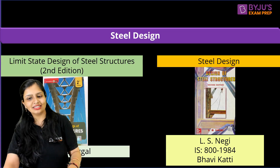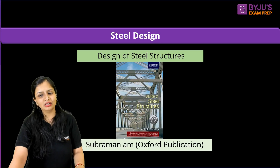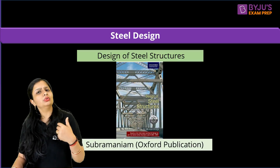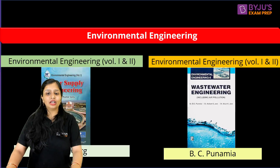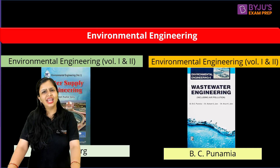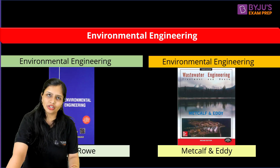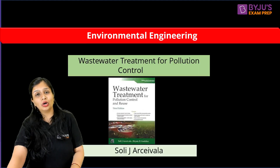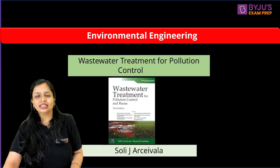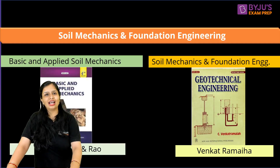For Steel Structures, I liked SK Duggal; you also have LS Negi, Bhavikattani, and Subramanyam by Oxford Publications. For Environmental Engineering at the basic level, SK Garg and BC Punamia are both fine — I personally prefer SK Garg. For foreign authors, Metcalf and Eddy for wastewater and PV Narayan Row for raw water are excellent. For pollution control, solid waste management — J AQR is a very good book.